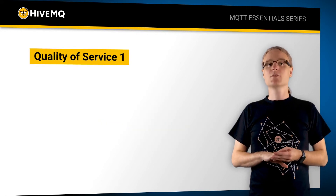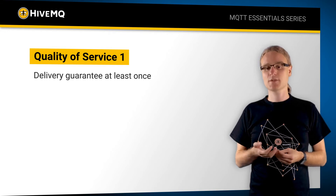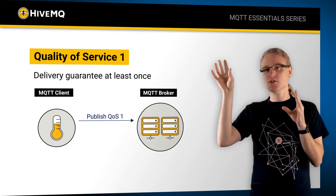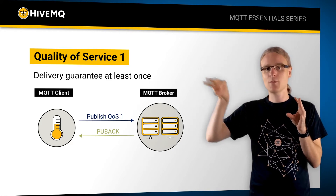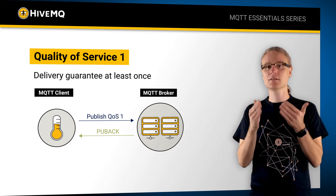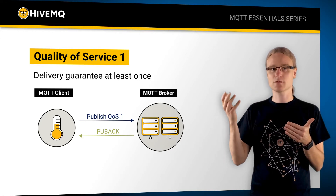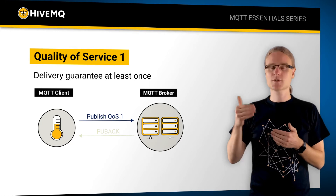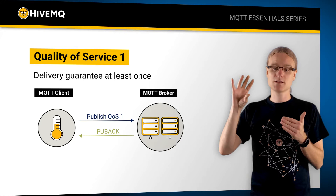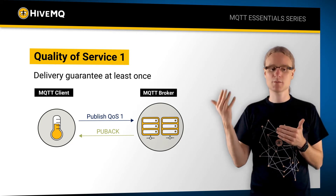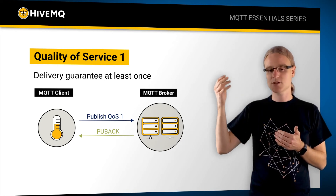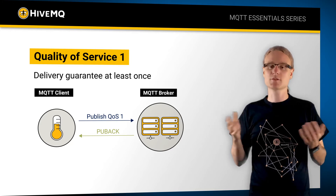Quality of service level one is at least once delivery. A publisher sends a message to the broker, and the broker sends back a PUBACK packet which acknowledges the message. As soon as the PUBACK is received, the client knows the message was processed successfully. If something goes wrong, such as a connection drop, and the client doesn't see a PUBACK, it will republish the message. In the worst case, you would have a duplicate. So you can guarantee a message is processed at least once, but it could also be processed multiple times.